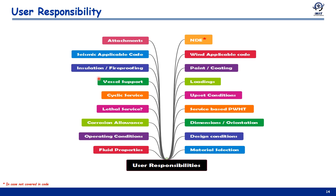Additionally, the user defines paint and coating requirements, insulation, fireproofing, applicable wind or seismic codes (which typically come from local jurisdiction or regulation), any NDE requirements mandated by the user that are not covered by the code, and what attachments will be on the vessel. All of these come from the end user or his designated agent, making the role of the user very crucial — they are the ultimate owner of the vessel.